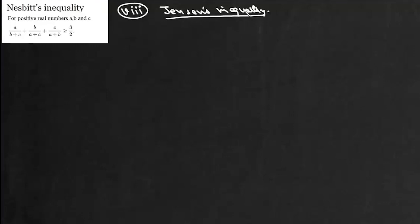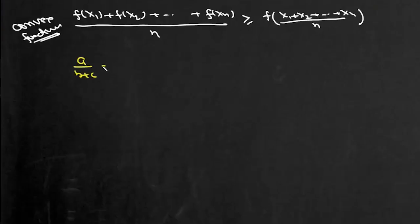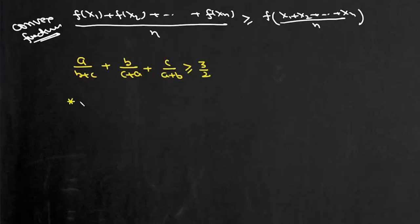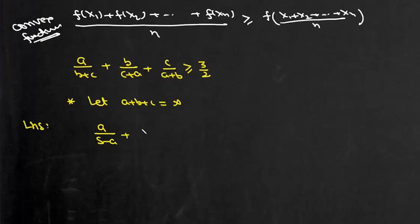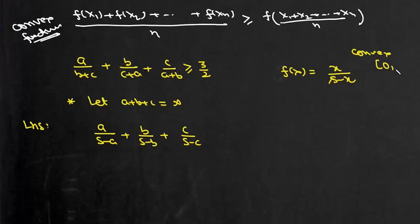An important inequality to prove using Jensen's inequality is: a/(b+c) + b/(c+a) + c/(a+b) ≥ 3/2. Let s = a + b + c, so the left-hand side becomes a/(s−a) + b/(s−b) + c/(s−c). Consider f(x) = x/(s−x). Since s = a+b+c and a, b, c are positive, all of a, b, c lie in the interval (0, s).